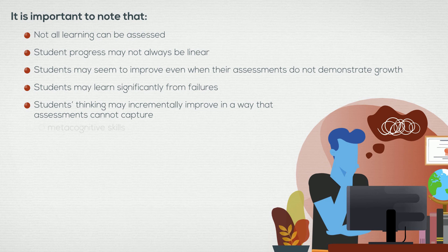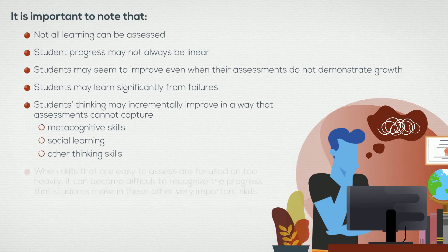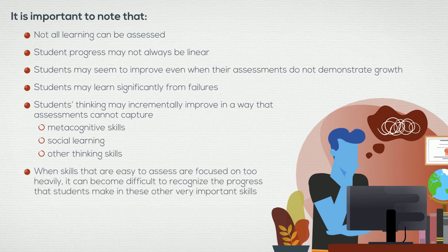For example, metacognitive skills, social learning, and other thinking skills are difficult to assess. Unfortunately, when skills that are easy to assess are focused on too heavily, it can become difficult to recognize the progress that students make in these other very important skills.